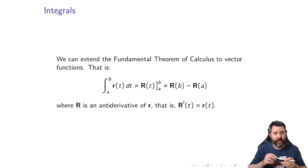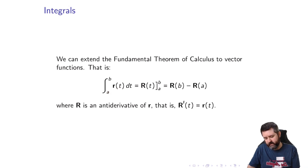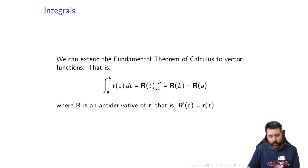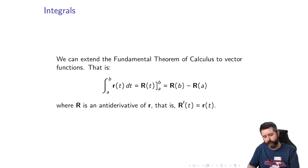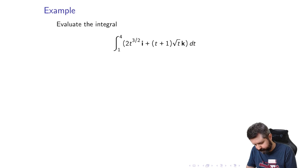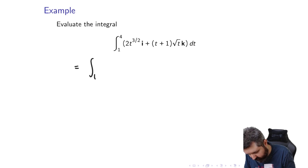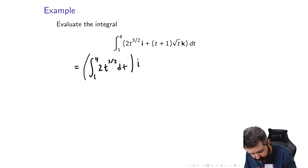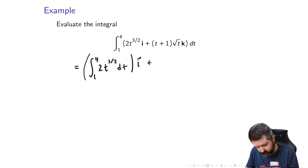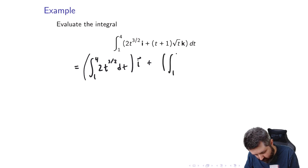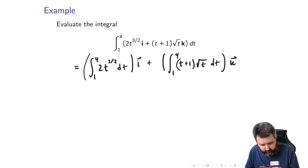We can also extend the Fundamental Theorem of Calculus to vector functions. The integral from a to b of r(t) dt equals the antiderivative R(t) evaluated from a to b, where R'(t) = r(t). Now evaluate the integral from 1 to 4 of ⟨2t^(3/2), 0, t + √t⟩ dt. This equals the integral of 2t^(3/2) dt times i plus zero j plus the integral of (t + √t) dt times k, from 1 to 4.